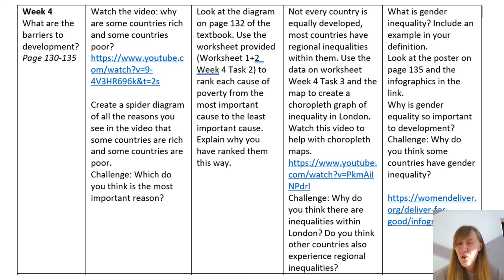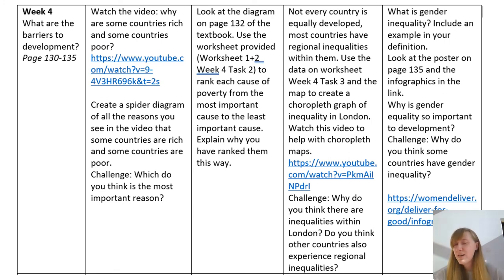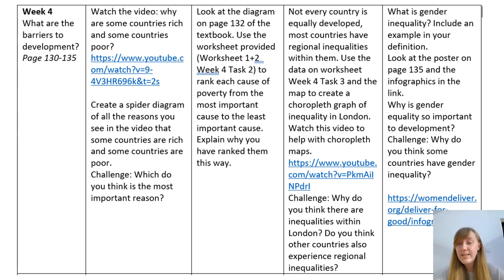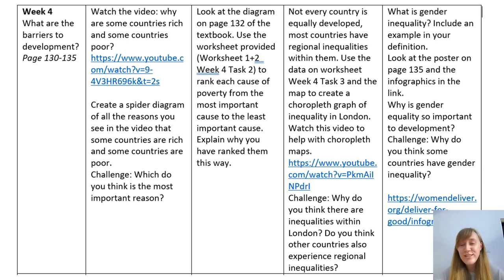Finally, task four is looking at gender inequality. There is a poster on page 135 of the book and infographics from Women Deliver on the web link below. You're going to explain why gender equality is important to development. If you want to do the challenge, think about why some countries have worse gender inequality than others, and consider the importance of gender equality for development.